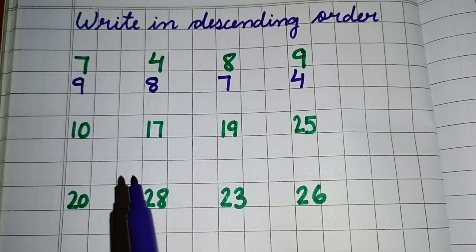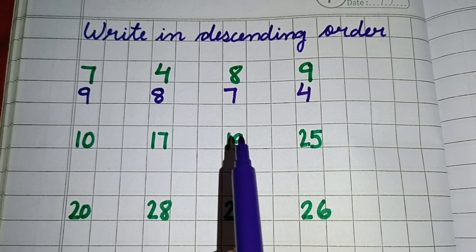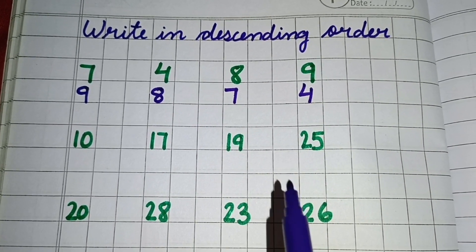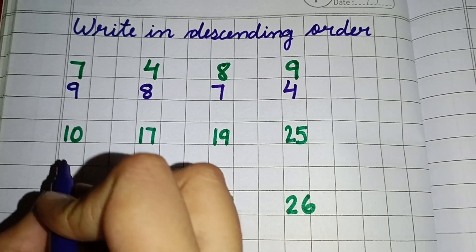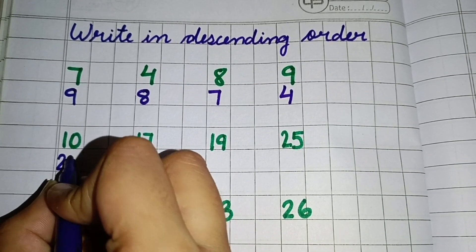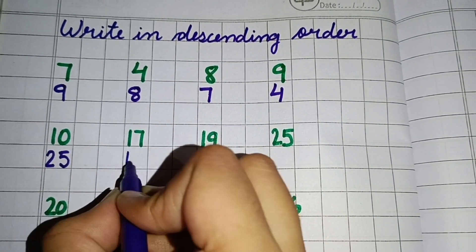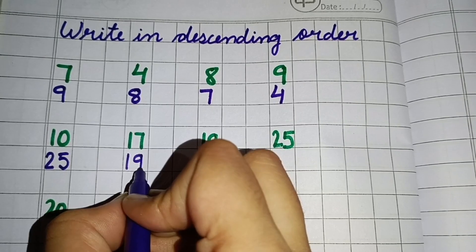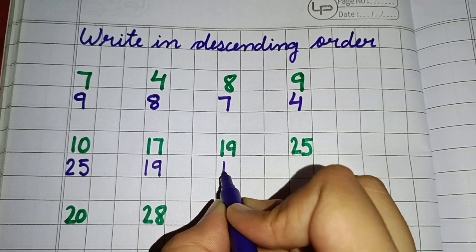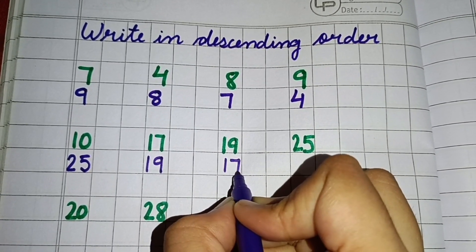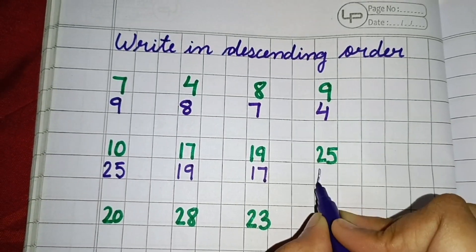Now we have 10, 17, 19 and 25. So here the biggest number is 25. So we will write here 25. After that we have 19, so we will write here 19. Then we have 17, so we will write here 17. And last we will write here 10.